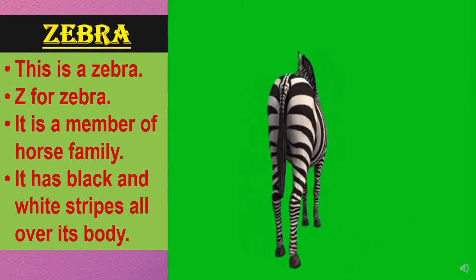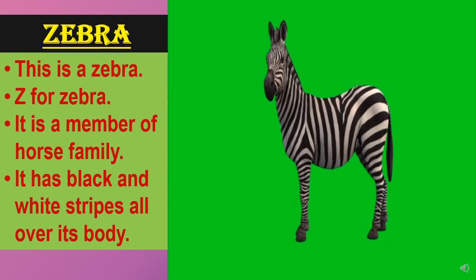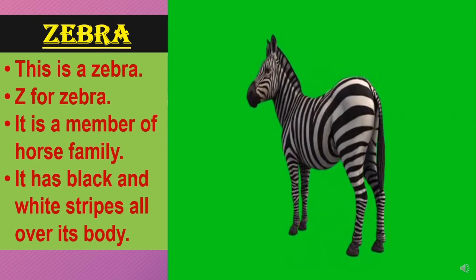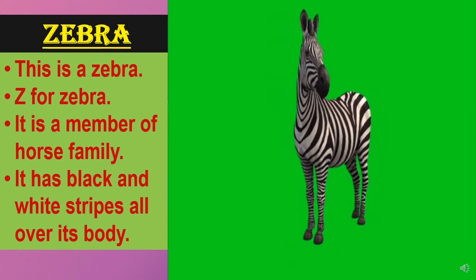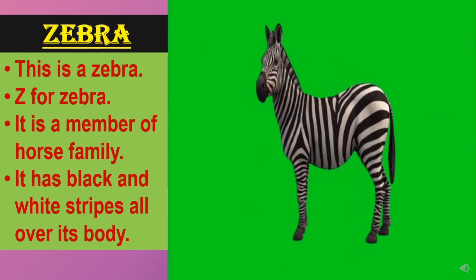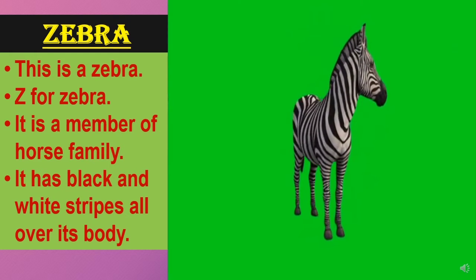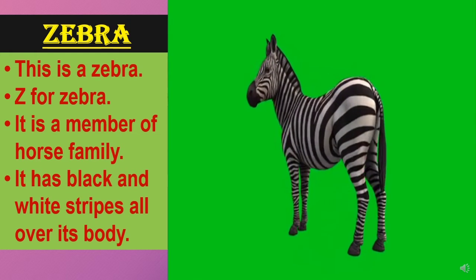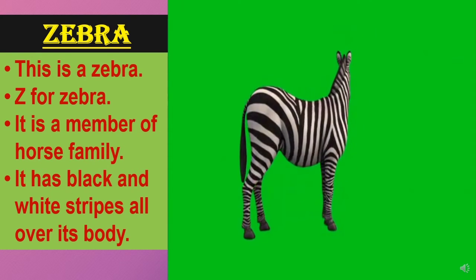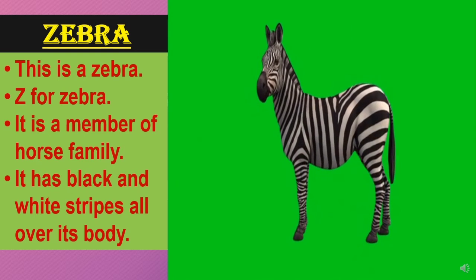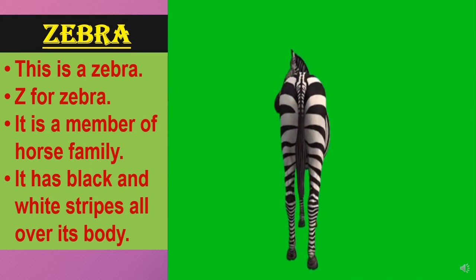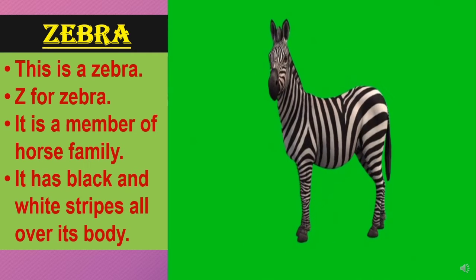This animal is beautiful to look at. This is a zebra — just look at it, it's so nice to look at. Z for zebra. It is a member of the horse family. It has black and white stripes all over its body.